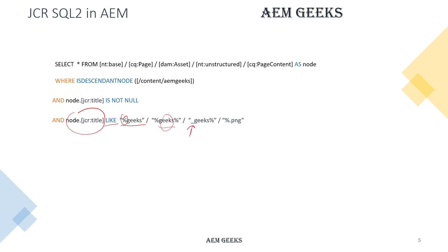You can also use an underscore (_) to represent a single character before 'geeks', with any string following. You can search for asset types as well — for example, if you need a PNG file, the name can be anything before '.png'. You can add any number of combinations as per your requirement. These are just simple use cases; there are very complex queries you can write using SQL2.